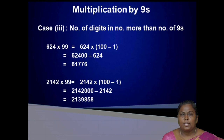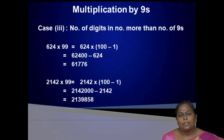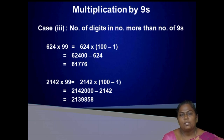Case 3: number of digits more than number of nines. For example, 624 into 99. Since 99 can be written as 100 minus 1, it is the easiest way of multiplying by nines: 624 into 100 minus 1, which equals 62400 minus 624, equal to 61776.